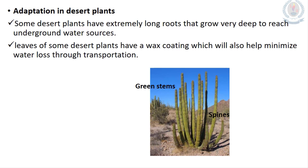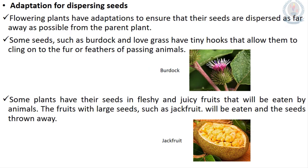Adaptations in desert plants: some desert plants have extremely long roots that grow very deep to reach underground water sources. Leaves of some desert plants such as cactus have a wax coating to minimize water loss through transpiration. They also have green stems to store water and spine-like structures to prevent water loss.